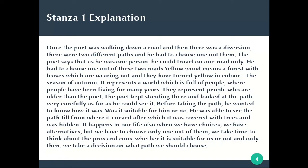In the first stanza, the autumn season is mentioned. This season means that the colors of the leaves are yellow and they are falling down from the trees. All the leaves are falling on the paths, and both paths where the poet wants to walk are covered in yellow color.